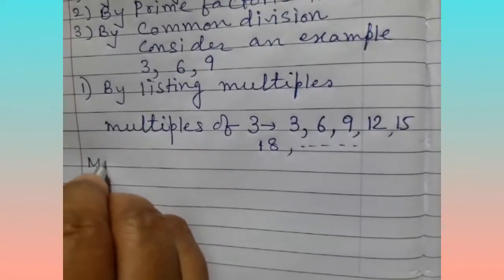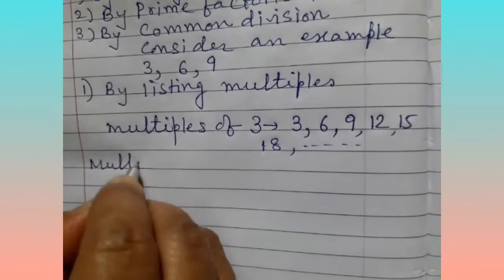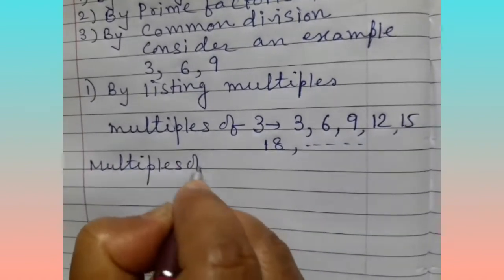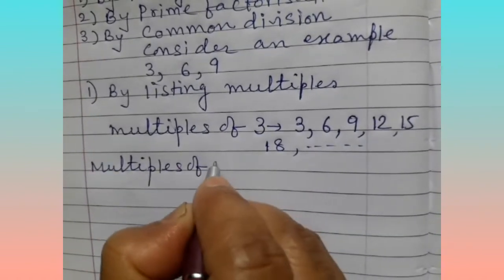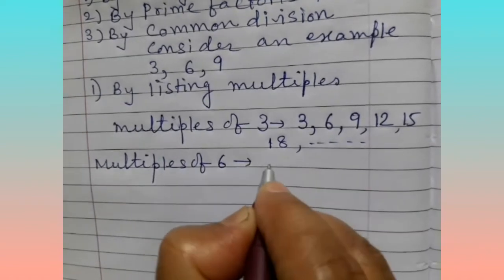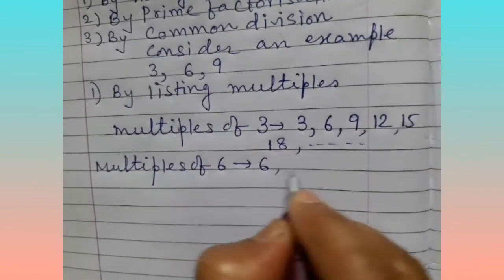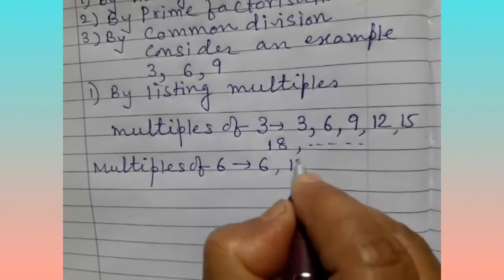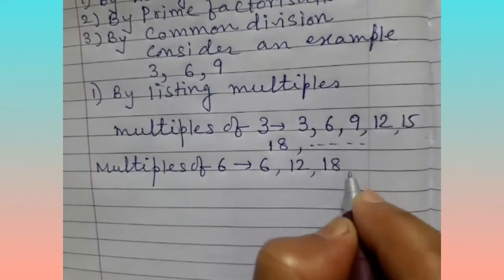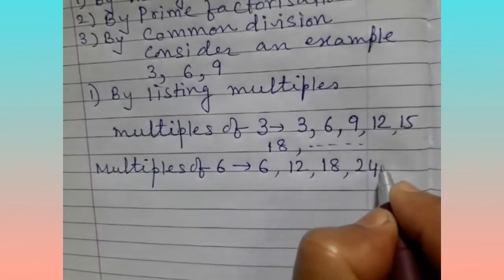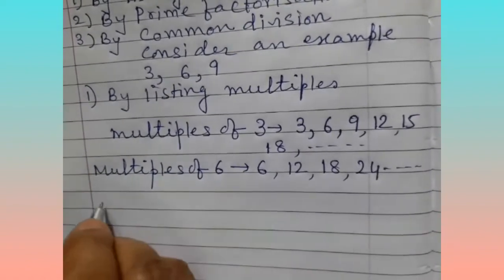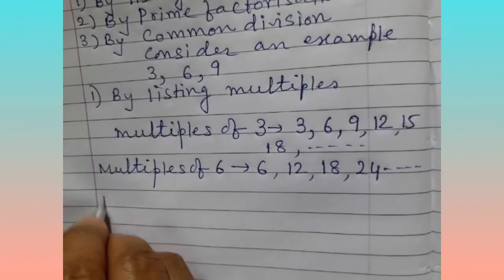Multiples of the next number, that is 6: 6 ones are 6, 6 twos are 12, 6 threes are 18, 6 fours are 24, and so on. Next number: 9.